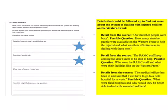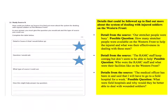You only need one detail from the source, but here are a few you could have extracted. The first is about the stretcher people — were they really that busy? You could ask how many stretcher people were available on the Western Front and what was their effectiveness. A second detail is the RMAC staff — they weren't able to help. Who were they and what were their facilities like? A third detail is the medical officer saying they would need to go to a field hospital for a week — what were the field hospitals and why would they be better able to deal with wounded soldiers?